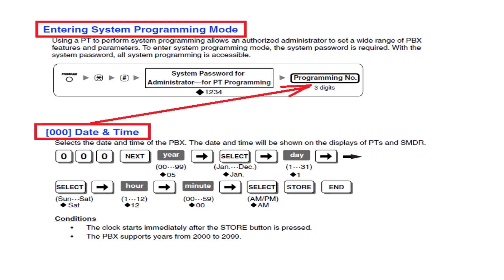To enter programming mode, press program button. Then press star hash 1234 from the key telephone without lifting the handset. 1234 is the default password to enter programming mode.